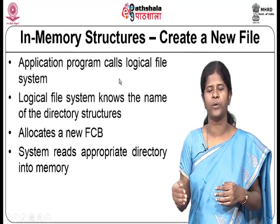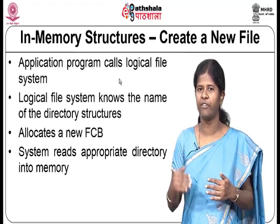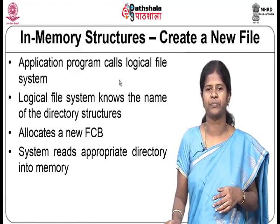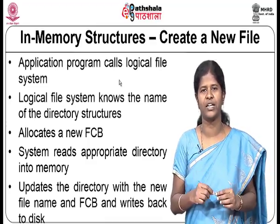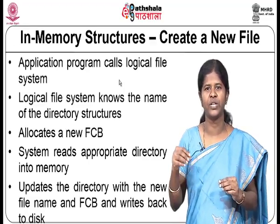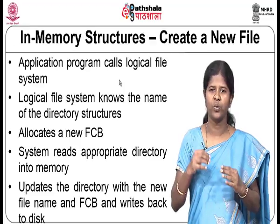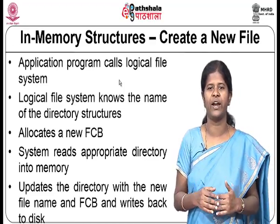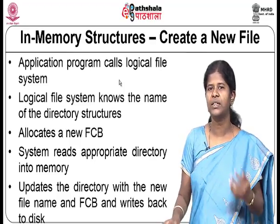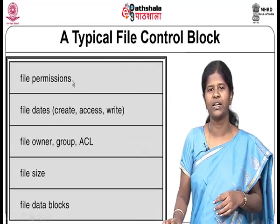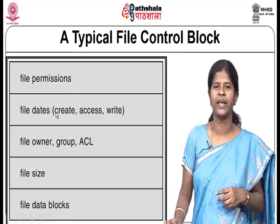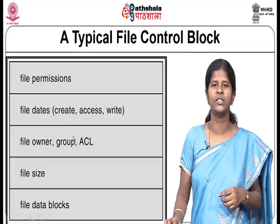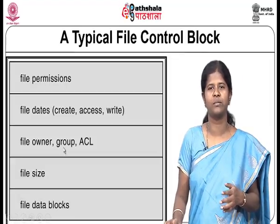The system reads the appropriate directory into memory. In the directory, an entry is created for the new file and the FCB data is written into that directory entry. Once this entry is made, the directory is written back to the disk. A typical file control block contains file permissions, file dates (created, accessed, written), owner, group, access control list, file size, and data block addresses.